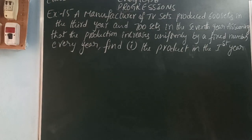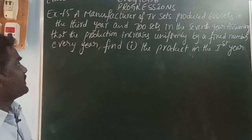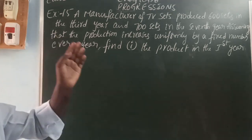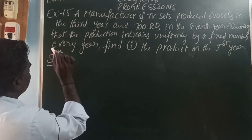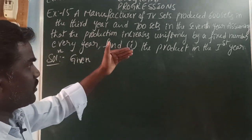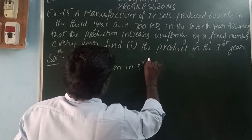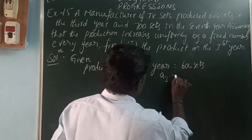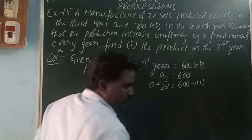Example 15: A manufacturer of TV sets produced 600 sets in the third year and 700 sets in the seventh year. Assuming that production increases uniformly by a fixed number every year, find the production in the first year. Given: production in the third year is 600 sets, so a3 = a + 2d = 600. That is equation one.